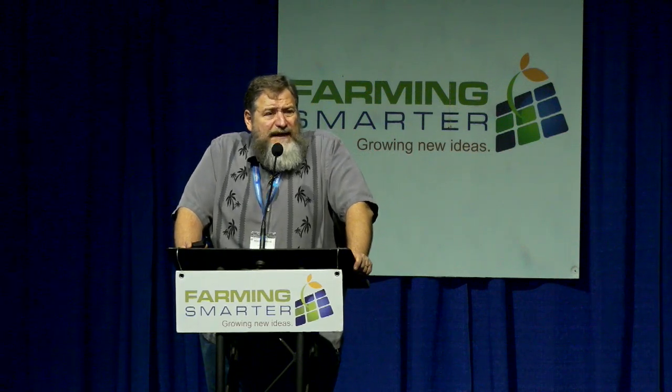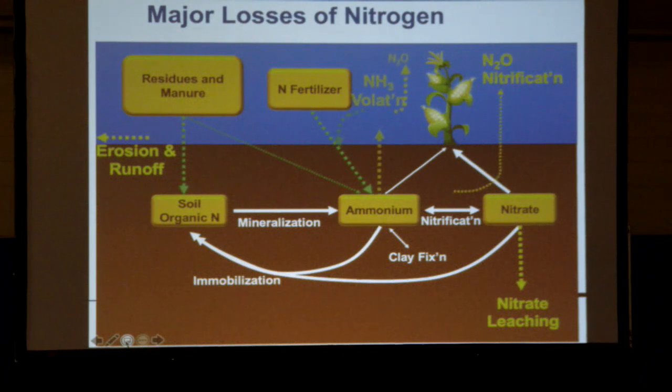Another area of loss is as N2O — nitrous oxide. Agriculture is the biggest producer of nitrous oxide, and we get our fingers pointed at us because of it. Nitrous oxide is a very potent greenhouse gas, and there is interest in reducing those emissions. Now, N2O is not a big agronomic concern — you may be losing one, two, three pounds, and we've seen at most maybe seven pounds of nitrogen coming off on a clay soil in the Red River Valley that's pretty wet and warm. It's not a major agronomic issue, but it is a huge environmental issue we need to address.